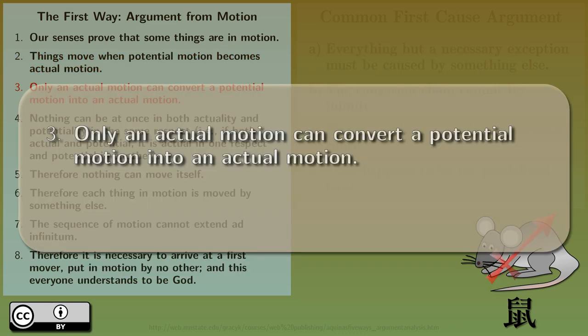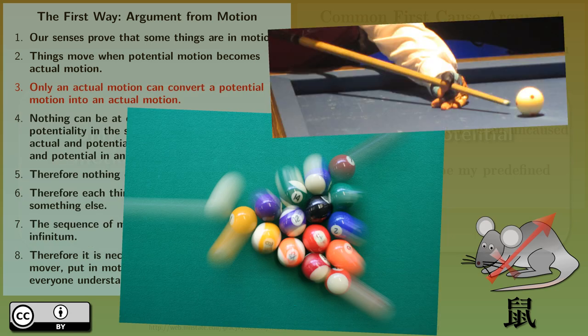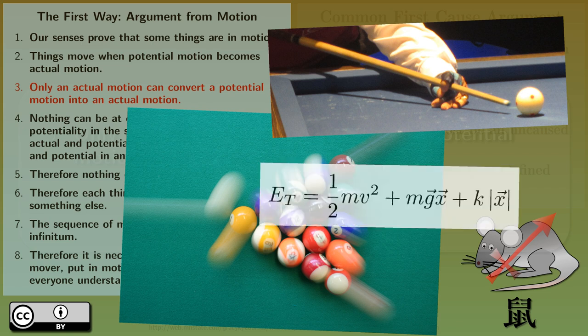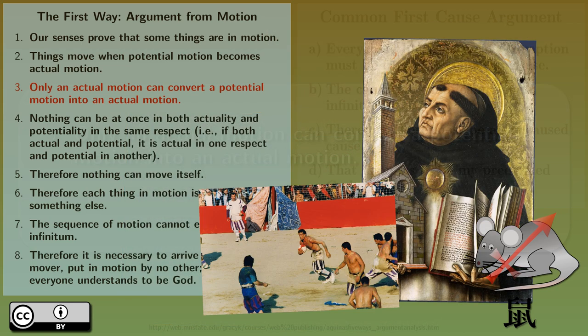Only an actual motion can convert a potential motion into an actual motion. Only kinetic energy can convert potential energy into kinetic energy. Well, energy transfer occurs, but it is far from the only way to convert potential energy into kinetic energy. The energy model does not describe Aquinas' argument. Let's see if we can think of something else, something that Aquinas could have observed, and let's see if we can describe it in modern terms.